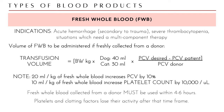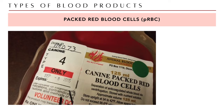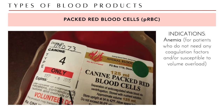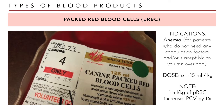If you are administering fresh whole blood for the benefit of platelets and clotting factors, give it within four to six hours after collection. Packed red blood cells are more commercially available than fresh whole blood, and the only indication for PRBCs is anemia — when you need to increase the packed cell volume because the animal has a low RBC count. The dose is 6 to 15 ml per kg.